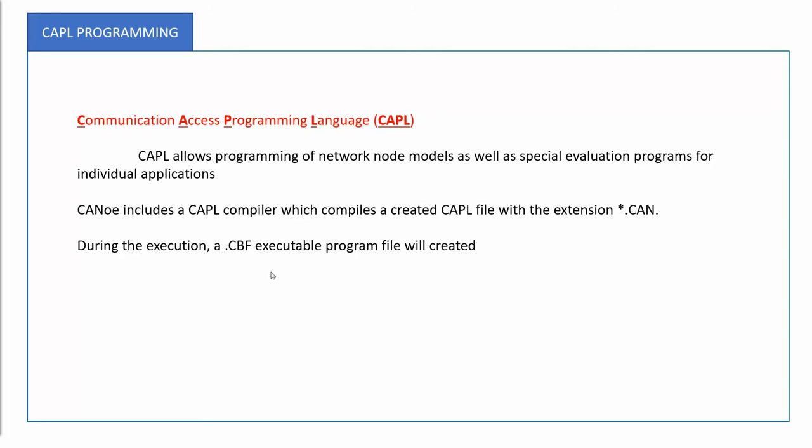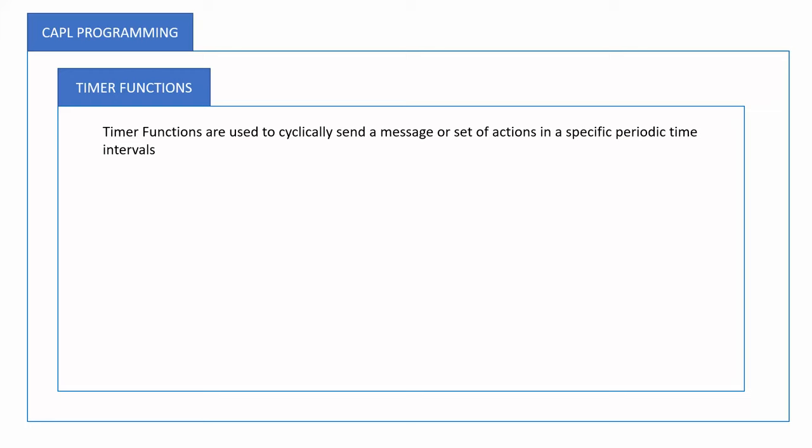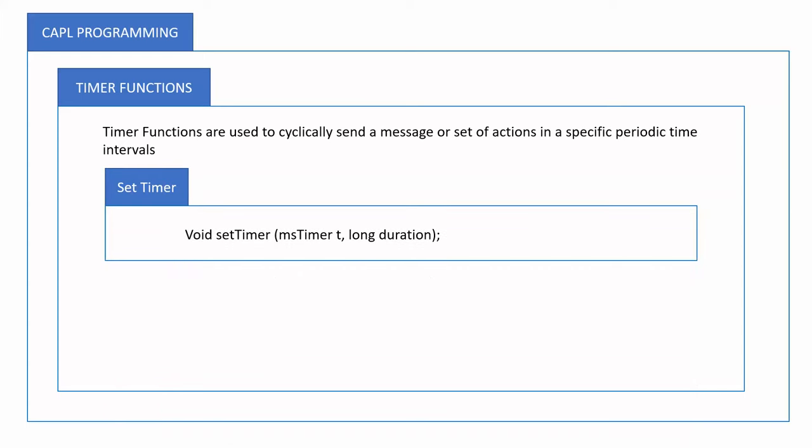In this video we will be focusing on the timer function. Timer functions are used to cyclically send a message or set of actions at specific periodic time intervals. For example, if you want to send a particular message at a defined periodicity, you can use timer functions. We have two different timer functions: set timer and cancel timer.